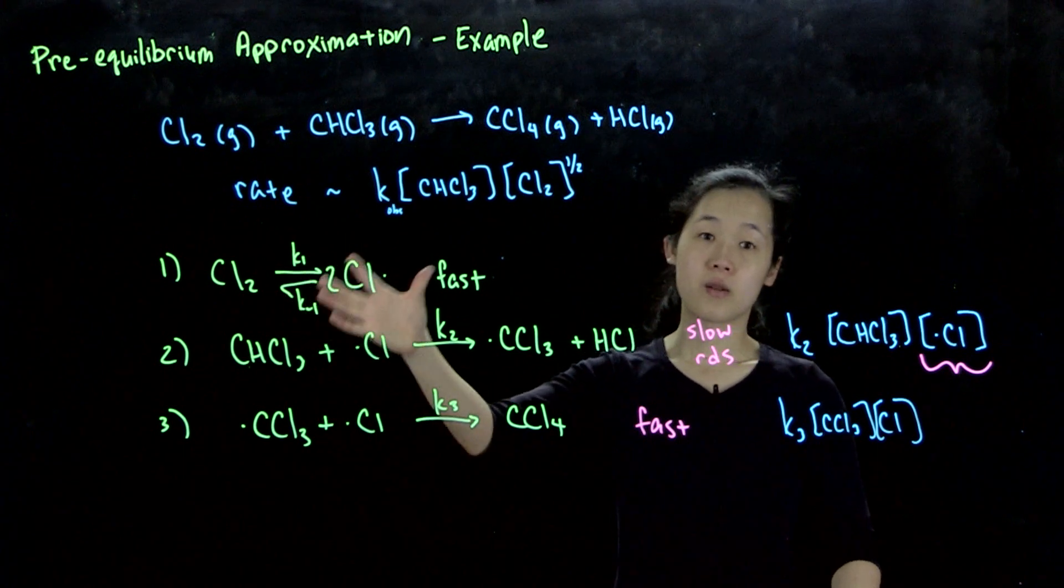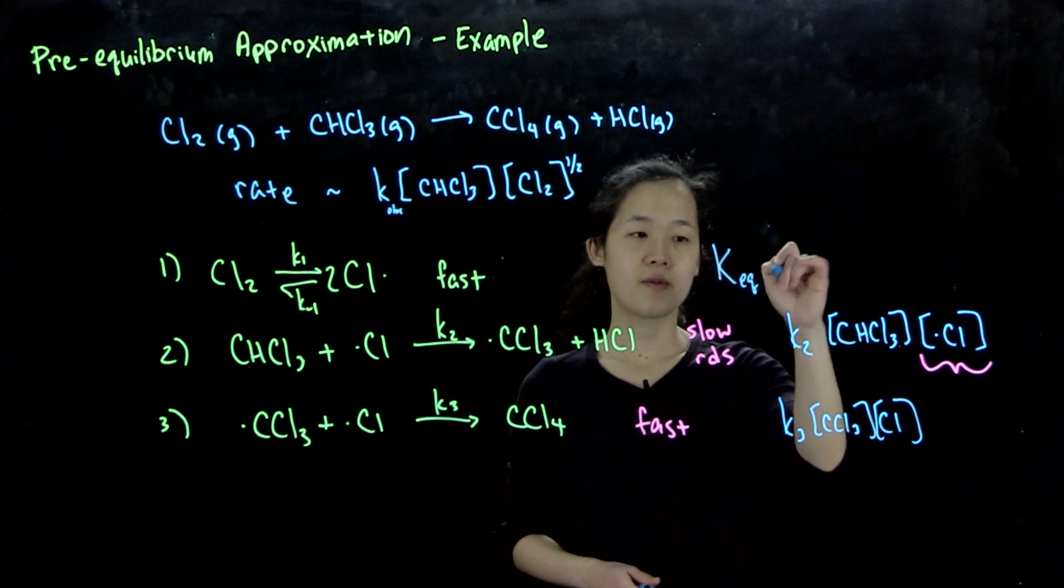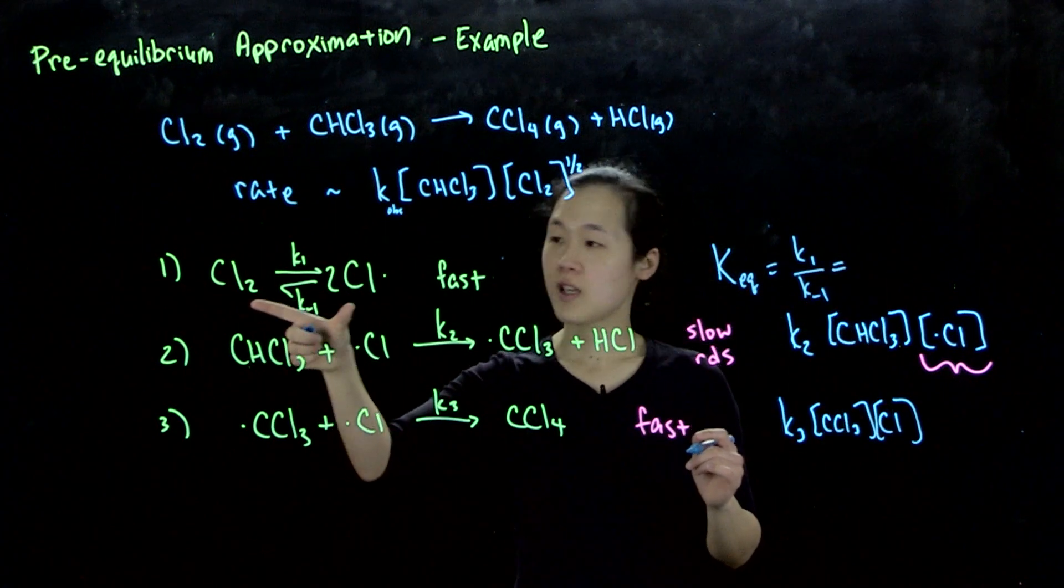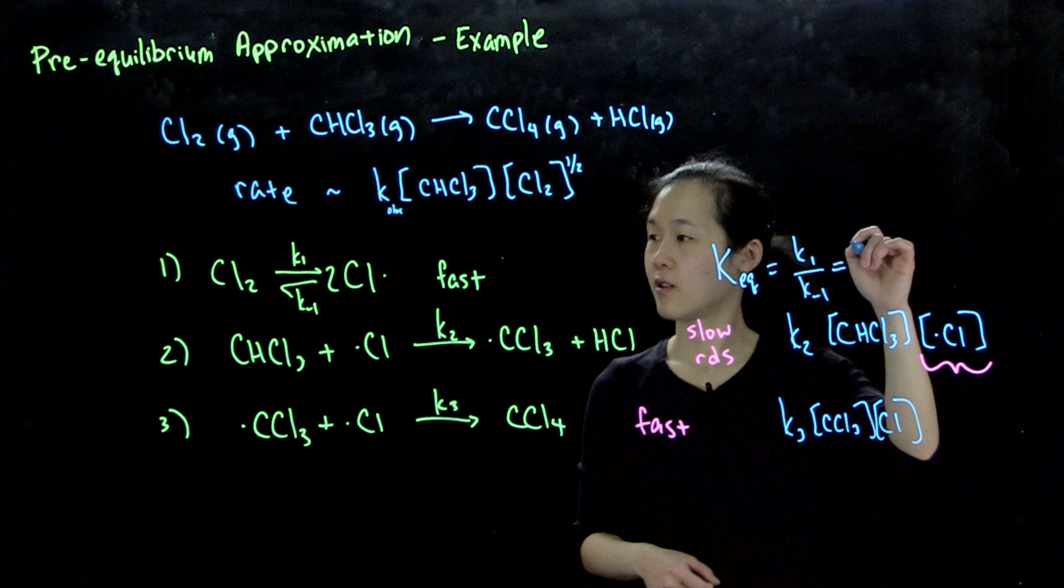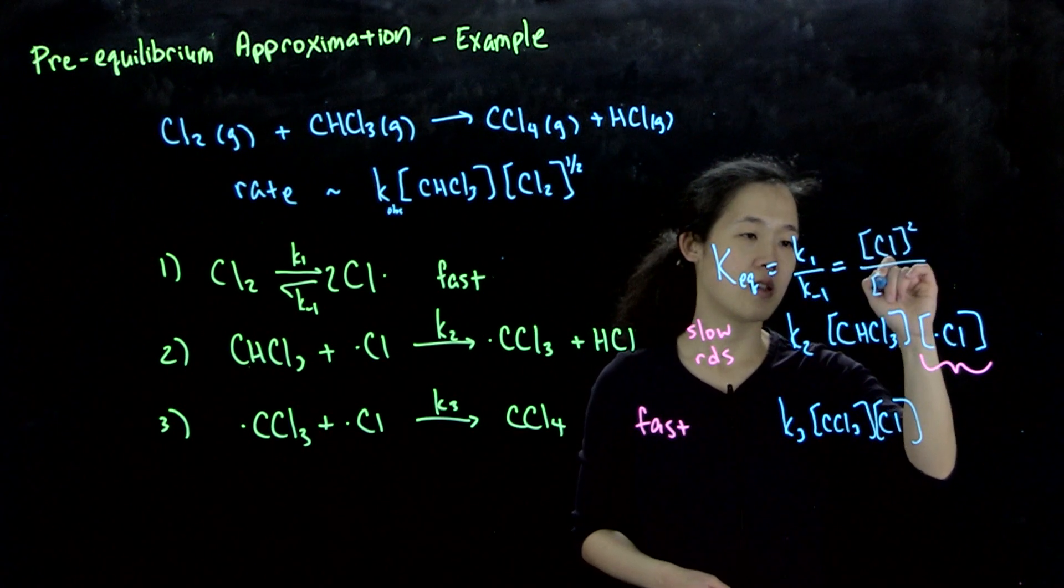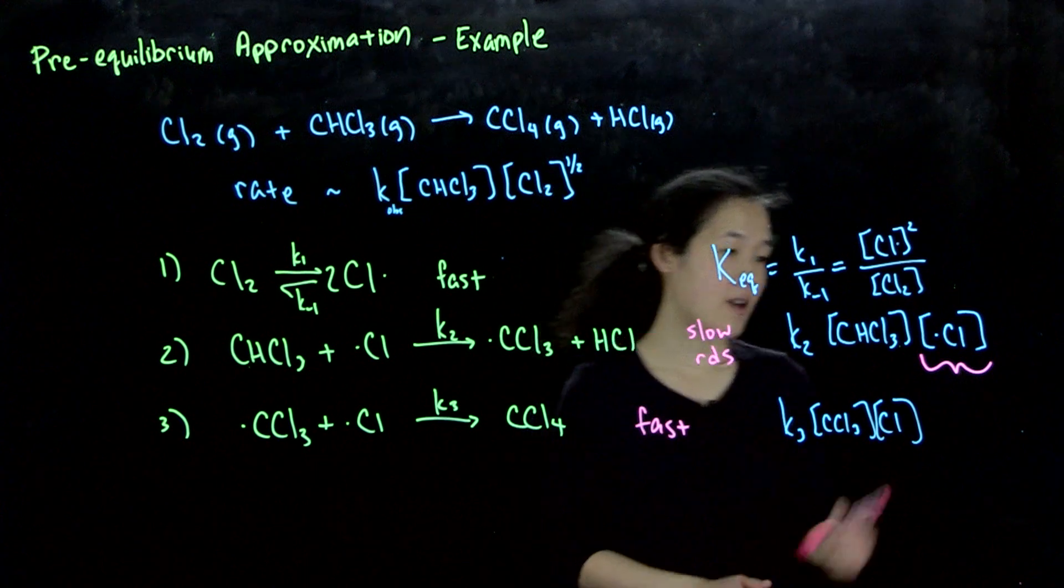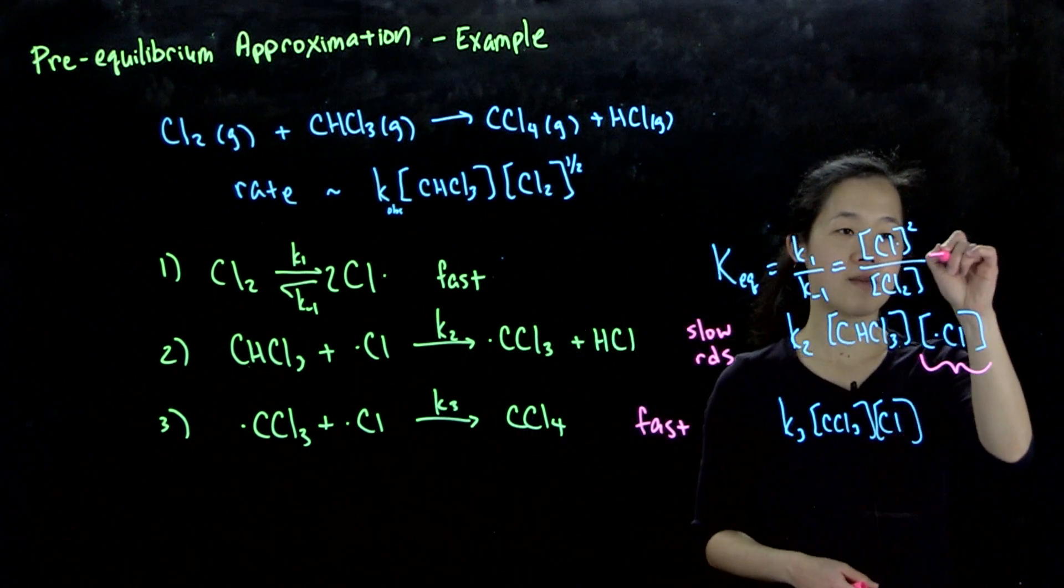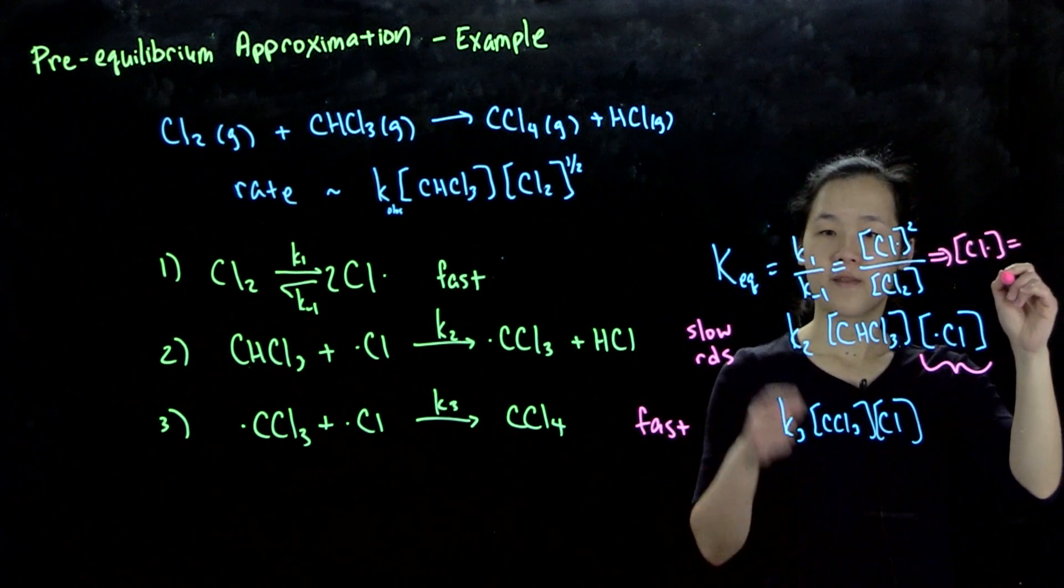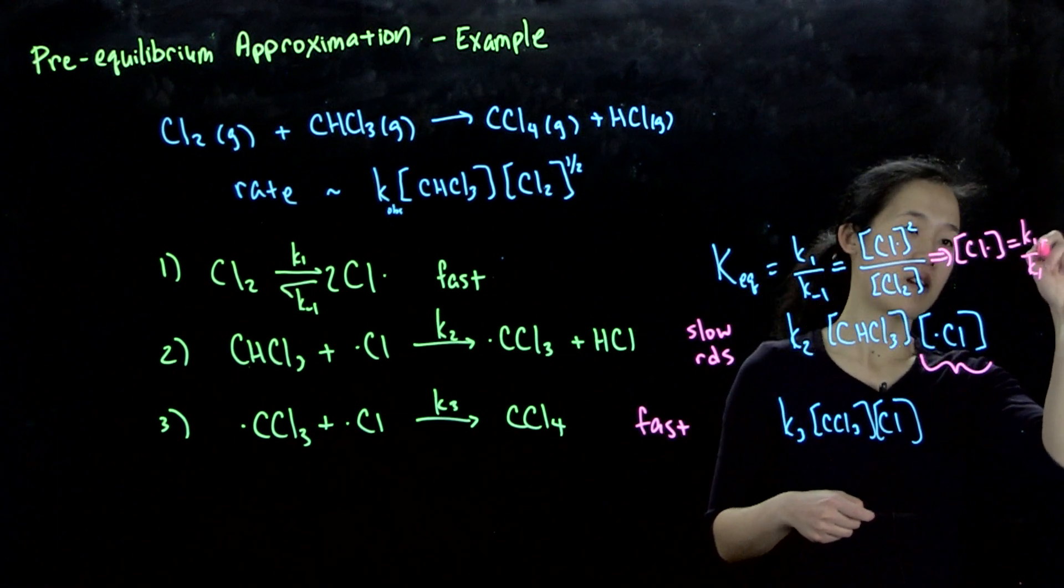Here is where our equilibrium comes into play. From the pre-equilibrium approximation, if it's an equilibrium, K_eq equals k₁ over k₋₁. In this case, we have two chlorine atoms, so this is going to be equal to [Cl]² over [Cl₂]. If we want to solve for the concentration of chlorine atom, this concentration equals the square root of k₁ over k₋₁ times the concentration of Cl₂.